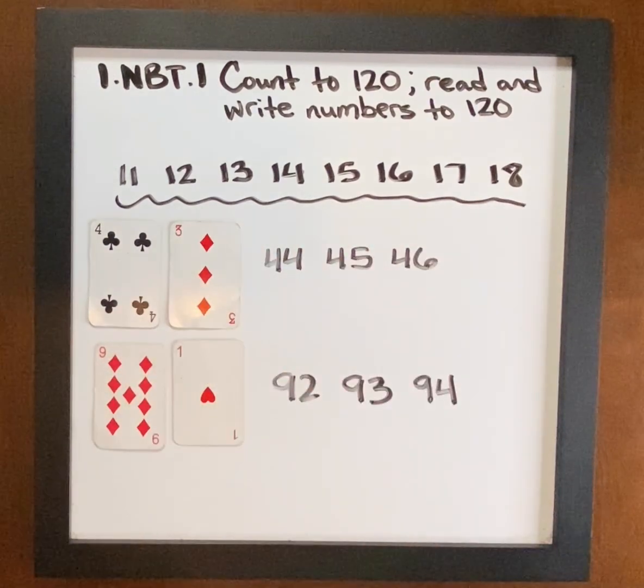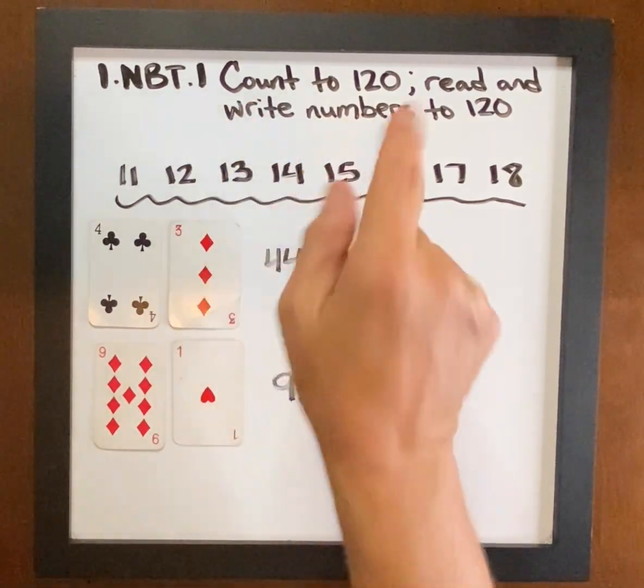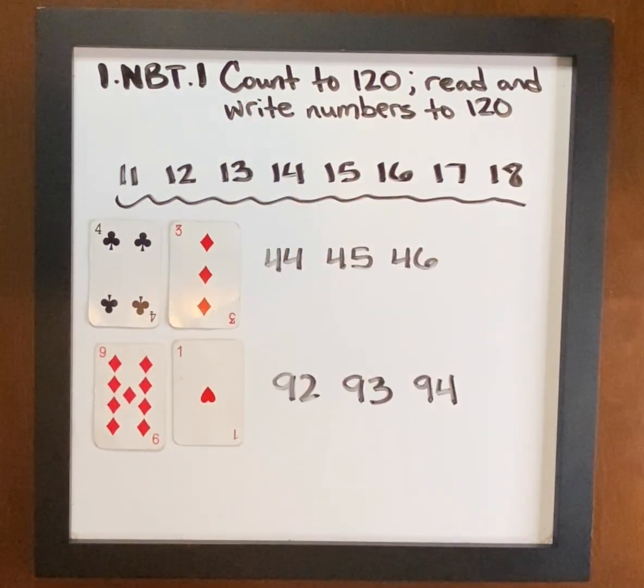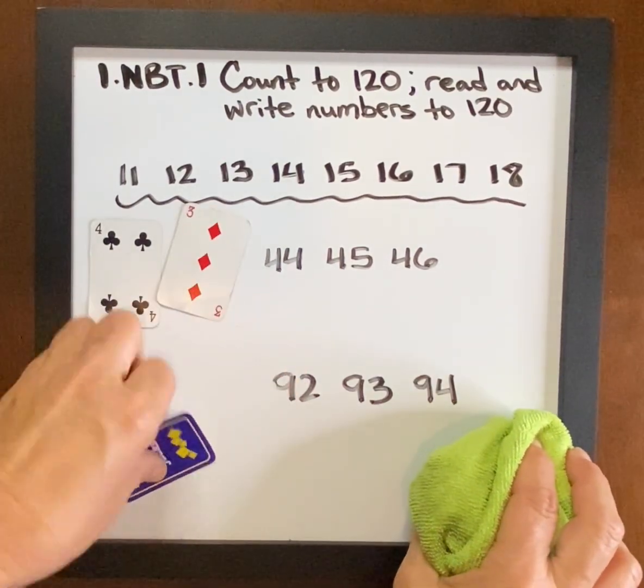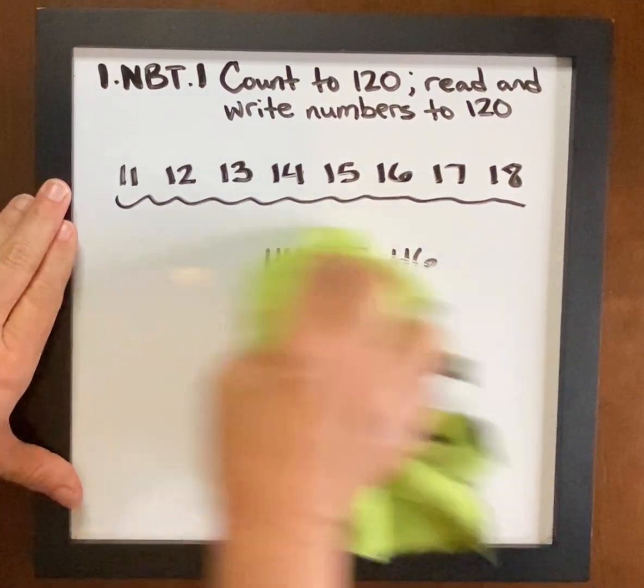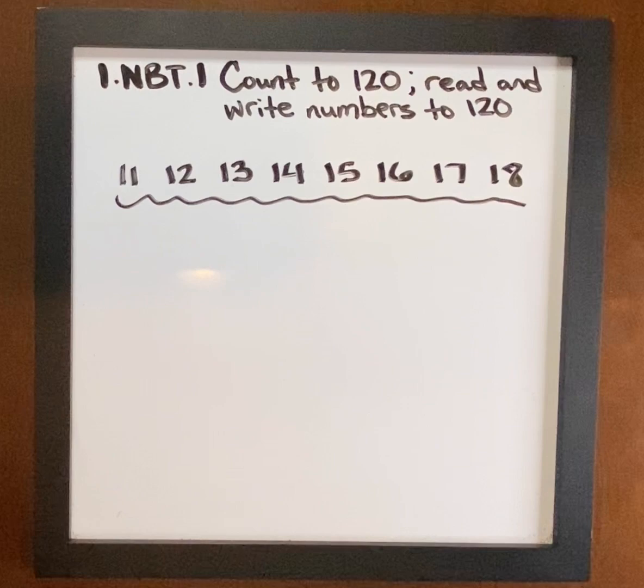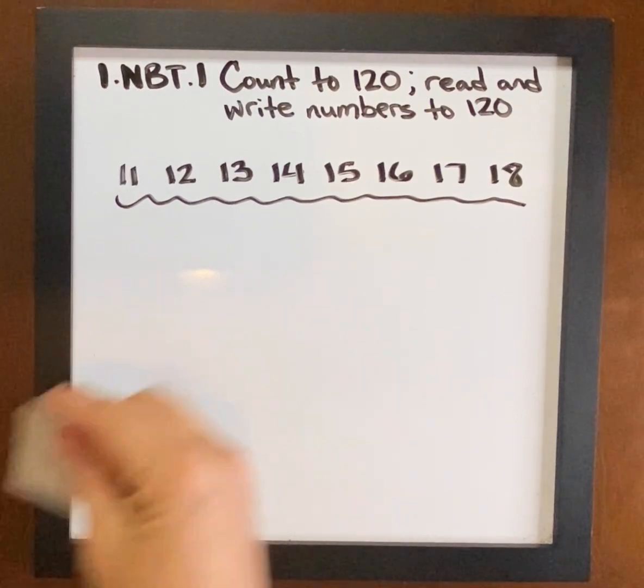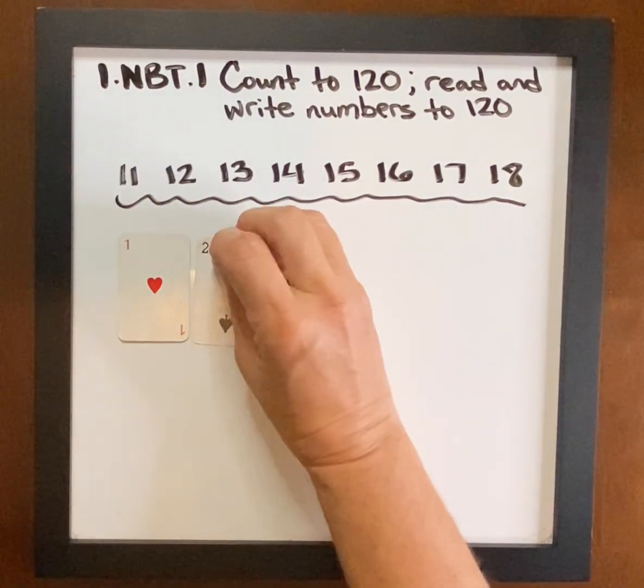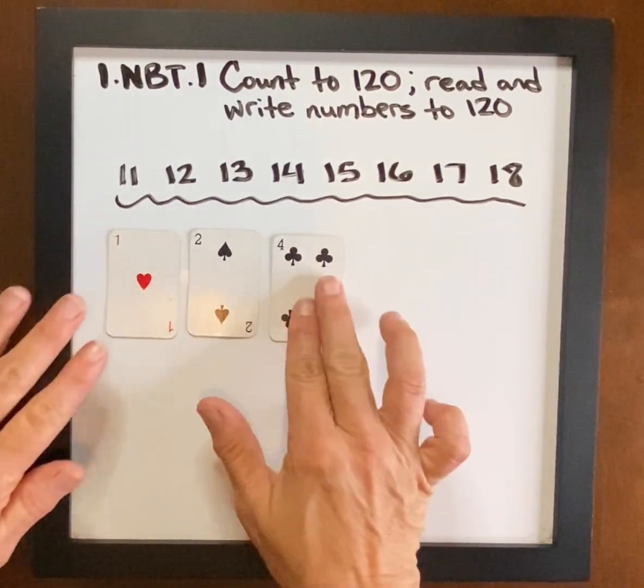All of these different ways are helping students make all these different pathways to being able to thoroughly understand counting to 120, reading and writing number names to 120. Another way to do this, to make sure that we get to that 120, is to have three cards.